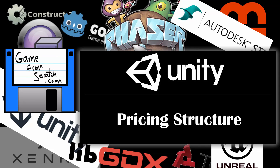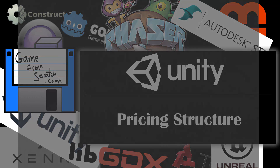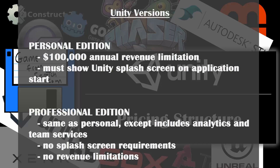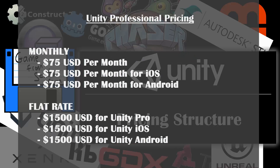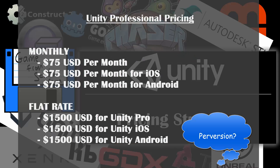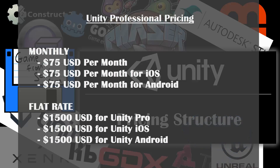The cost structure of Unity used to be very confusing, but now it's a little bit simpler. There's a personal and a professional edition. The personal edition has two major limitations: you have to make less than $100,000 a year, and you have to show a splash screen. If neither of those works for you, you need the professional edition, which includes team collaboration and analytics tools. On the professional side, you can buy it monthly or per version. Per version — a 5.x or 6.x release — costs $1,500 for the base license, plus $1,500 for iOS and $1,500 for Android, so all three platforms comes to $4,500. Or on a monthly basis, it's $75 a month per platform, so all three platforms is $225 US a month.